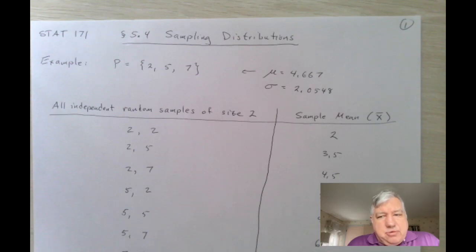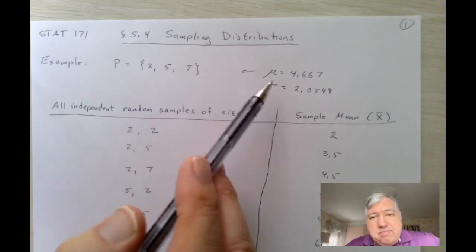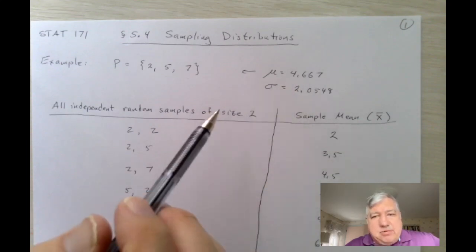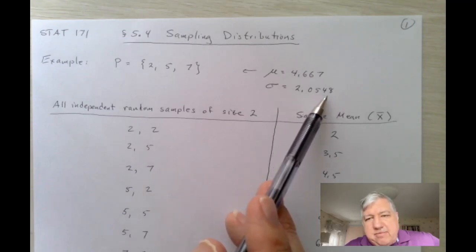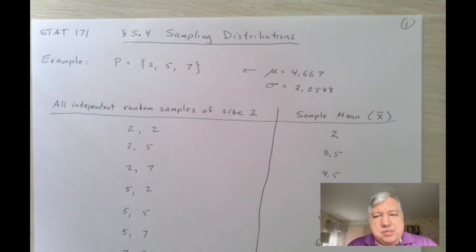I want to start by doing a rather stupid example, and I say it's stupid because this involves a population of exactly three, three items, three data values. And we're going to assume that let's suppose it's too taxing for us to compute the mean when we're dealing with a set of size three, but we're somehow able to do it with a set of size two. Now of course in reality we can easily compute the mean of this. The mean is 4.667 and we round it to two decimal places, and the standard deviation is 2.0548.